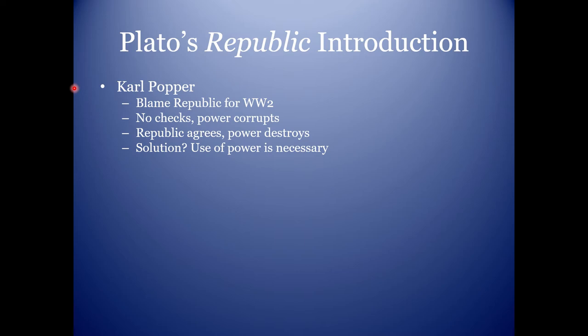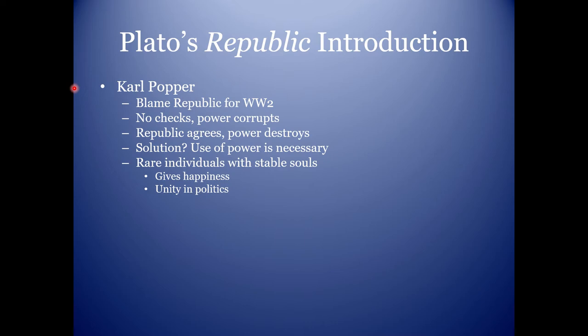If we admit that someone needs to wield power, we need to find someone to wield it. As Melissa Lane writes, if all but very few rare individuals are able to achieve stability and order in their souls — which gives happiness — and in their policies, which gives unity, there are rare individuals with stable enough souls that can handle power without desiring it and without being corrupted by it. So Plato's journey is to figure out who these people are and how we can make them lead.